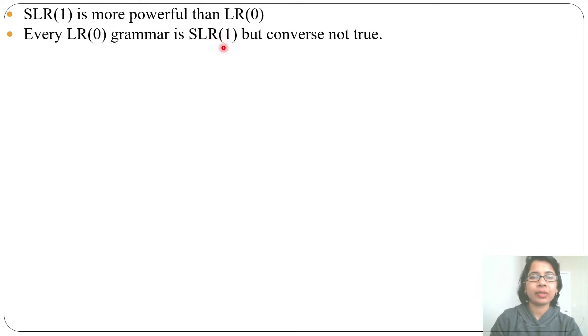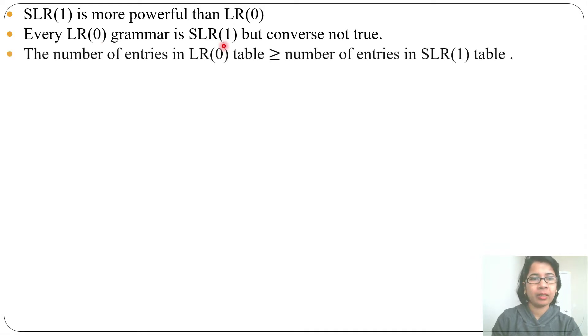I already discussed two examples which are not LR0 but SLR1, and the number of entries in LR0 table is greater than or equal to the number of entries in SLR1 table. This is due to reduction.